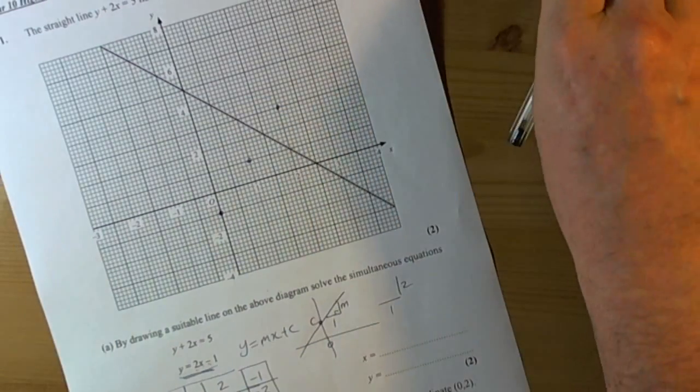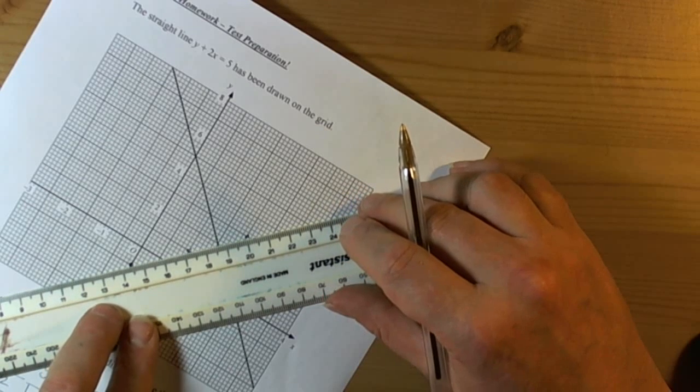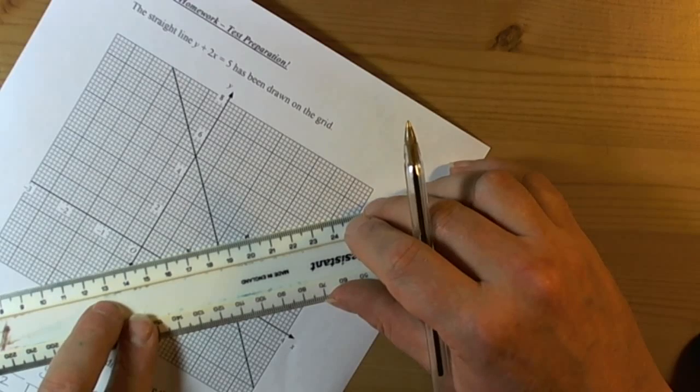So once I've got my three coordinates plotted, then I know this is the equation of a straight line, so I can just get my ruler and draw that straight line through them.